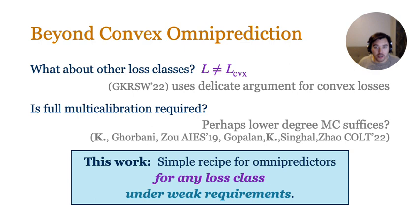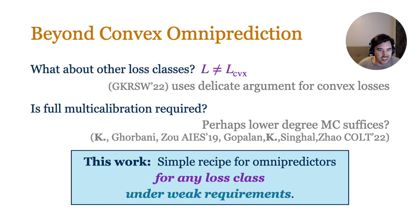In this work, we address these questions, giving a simple recipe to construct omnipredictors for any loss class under considerably weaker requirements than full multi-calibration. Our work demonstrates that rather than being a delicate and rare notion, omniprediction is actually a broad and general phenomenon, and can be achieved in many interesting cases in complexity comparable to traditional loss minimization.